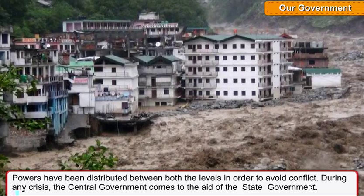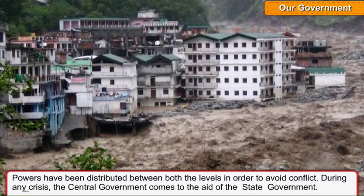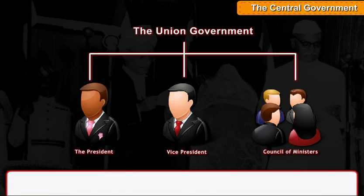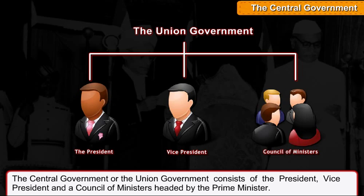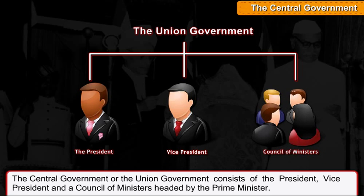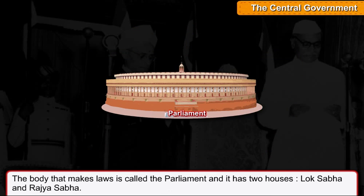During any crisis, the central government comes to the aid of the state government. The central government, or the union government, consists of the President, Vice President, and a Council of Ministers headed by the Prime Minister.